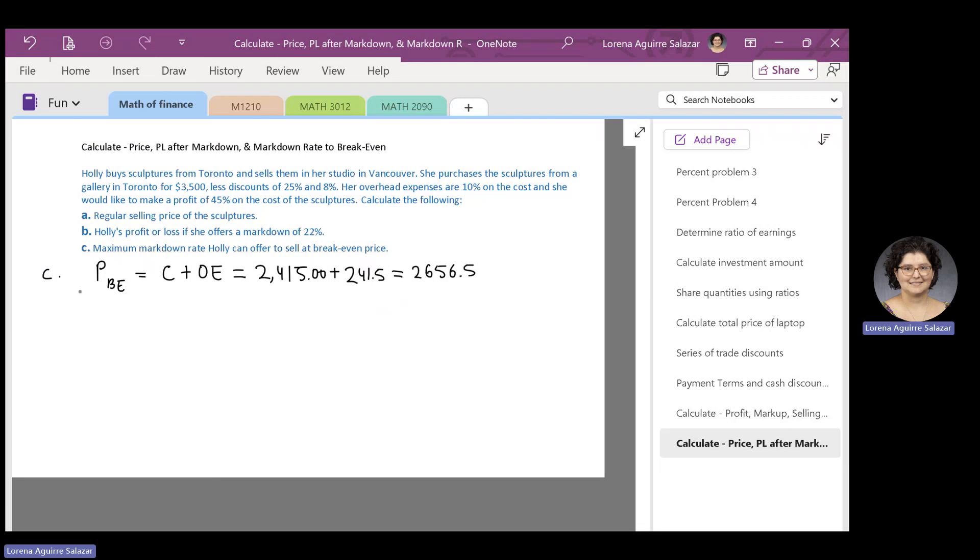Then, with this information, what we get is that the maximum markdown rate is given by P minus that reduced price, the break-even price, divided by P multiplied by 100 percent. So, we're doing $3,743.25 minus $2,656.5 divided by $3,743.25, and all that multiplied by 100. And when we subtract those numbers on top, divide by the bottom and multiply by 100, we get 29.03